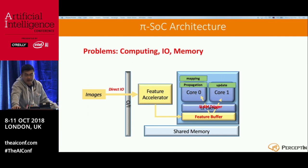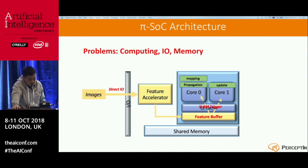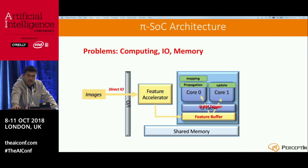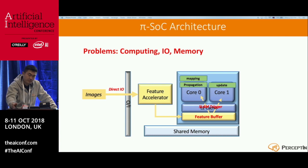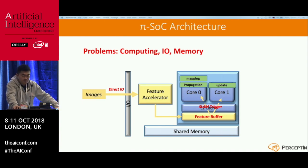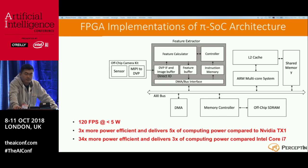We then asked ourselves: what's the perfect architecture for these AI applications? The bottleneck in SLAM is really at feature extraction and feature matching — the image processing front end. So we came up with what we call the PySOC architecture — SOC meaning system-on-chip, Py standing for Perceptin. Instead of doing a lot of data copying from CPU to memory and back, you feed images directly through a hardware accelerator. Once feature extraction is done, you send extracted features to a feature buffer. That simple step reduces the amount of data by 1,000-fold, reducing CPU computing stress by 1,000-fold. We implemented the whole thing on a Xilinx FPGA and achieved 120 frames per second for less than 5 watts.